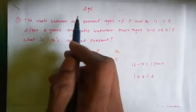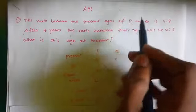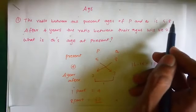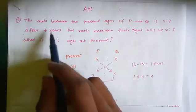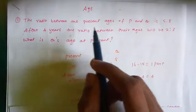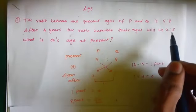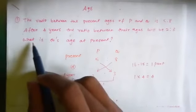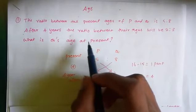The ratio between the present ages of P and Q is 5 is to 8. After 4 years, the ratio between their ages will be 2 is to 3. What is Q's age at present?